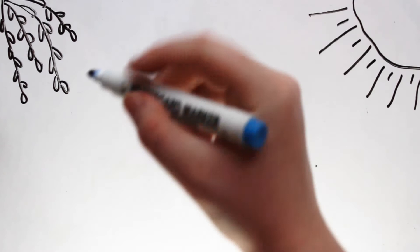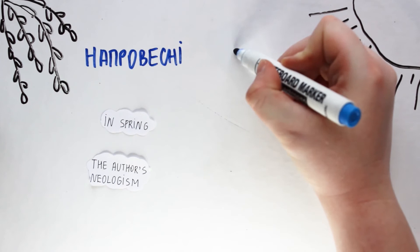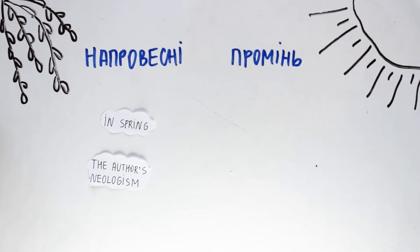Lesya Ukrainka introduced into the Ukrainian language such words as naprovosni, which means in spring, and promen, which is translated as array. The first one is considered to be the author's neologism, the second one is a scientific term.